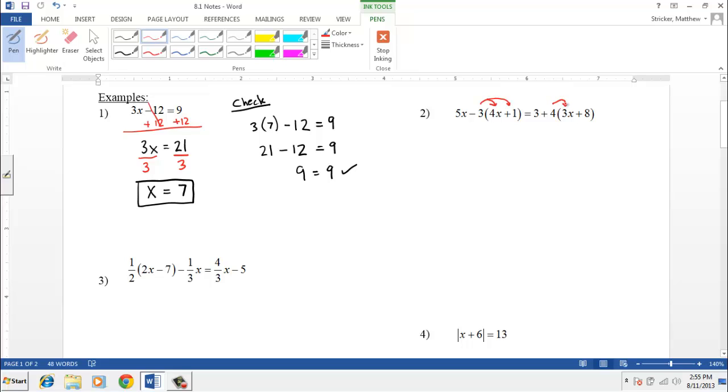Now, the most common mistake made by students is that when they distribute on that first set of parentheses, they don't distribute the negative with the 3. And we want to make sure we do that. So the left-hand side is going to be transformed into 5x. And we're going to take not just 3, but negative 3 times 4x, which gives us a negative 12x. And then also negative 3 times positive 1, which gives us a negative 3. Likewise, on the right-hand side, we're going to distribute the 4, getting a 12x plus 32.